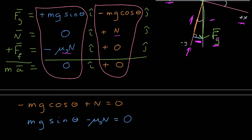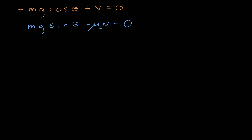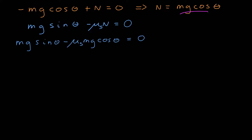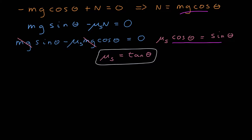This gives us scalar relationships between all these parameters. Along the y axis, negative mg cosine theta plus the magnitude of the normal force equals zero. Along the x components, mg sine theta minus mu sub s times the magnitude of the normal force equals zero. Using the first equation to solve for the normal force — the normal force equals mg cosine theta — and substituting into the x equation, we can divide both sides by mg. Bringing mu sub s cosine theta to the other side and dividing both sides by cosine theta gives us that the coefficient of static friction equals tangent theta.